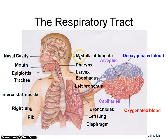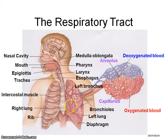The medulla oblongata is part of the brain stem. We've talked about it in chapter 9 because it also looks after your heart rate, vasodilation, vasoconstriction, and movement of blood through your vessels. There are some animations that are really good to watch that would help you understand respiration. They're linked on the class notes page and in Edmodo.